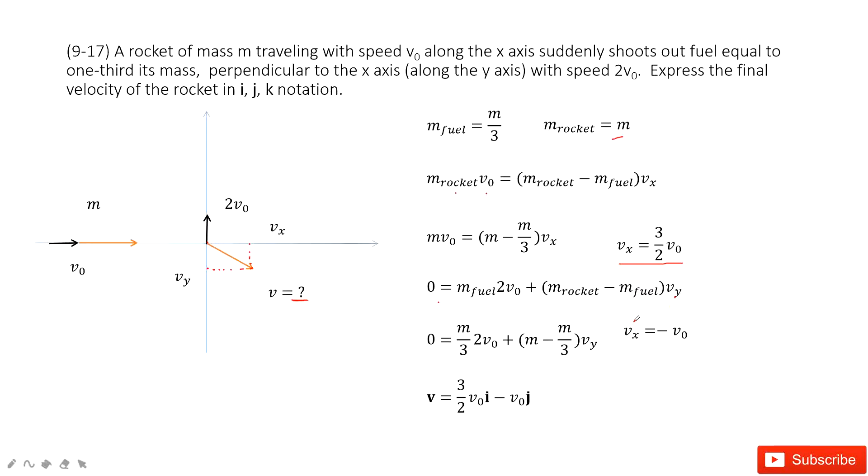And in this one, we input the known quantities. Fuel is one-third of mass. And then rocket is mass m minus the fuel, one-third of the m, times vy. We can get vy.